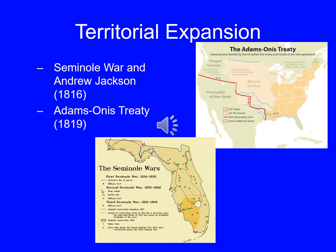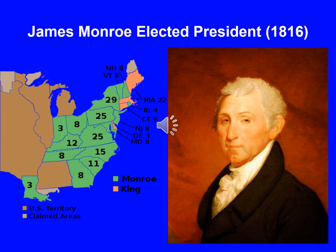James Monroe was elected president in 1816 over Rufus King, the Federalist candidate. Monroe soundly beat King in the Electoral College. Monroe's election touches off what is known as the Era of Good Feelings. The first of our large themes during this time period is territorial expansion by the United States, which starts with the drawing of the Adams-Onís Treaty.